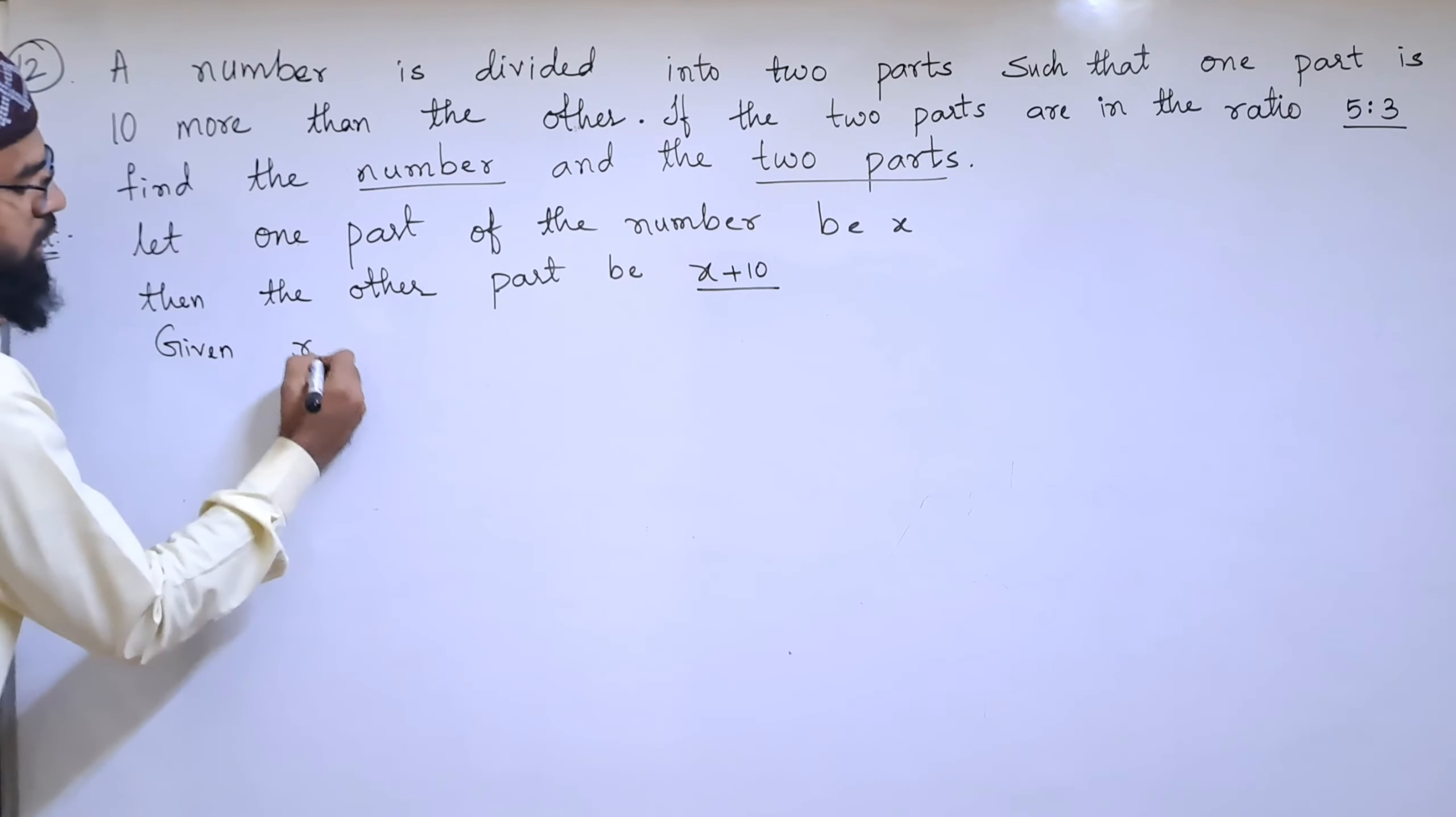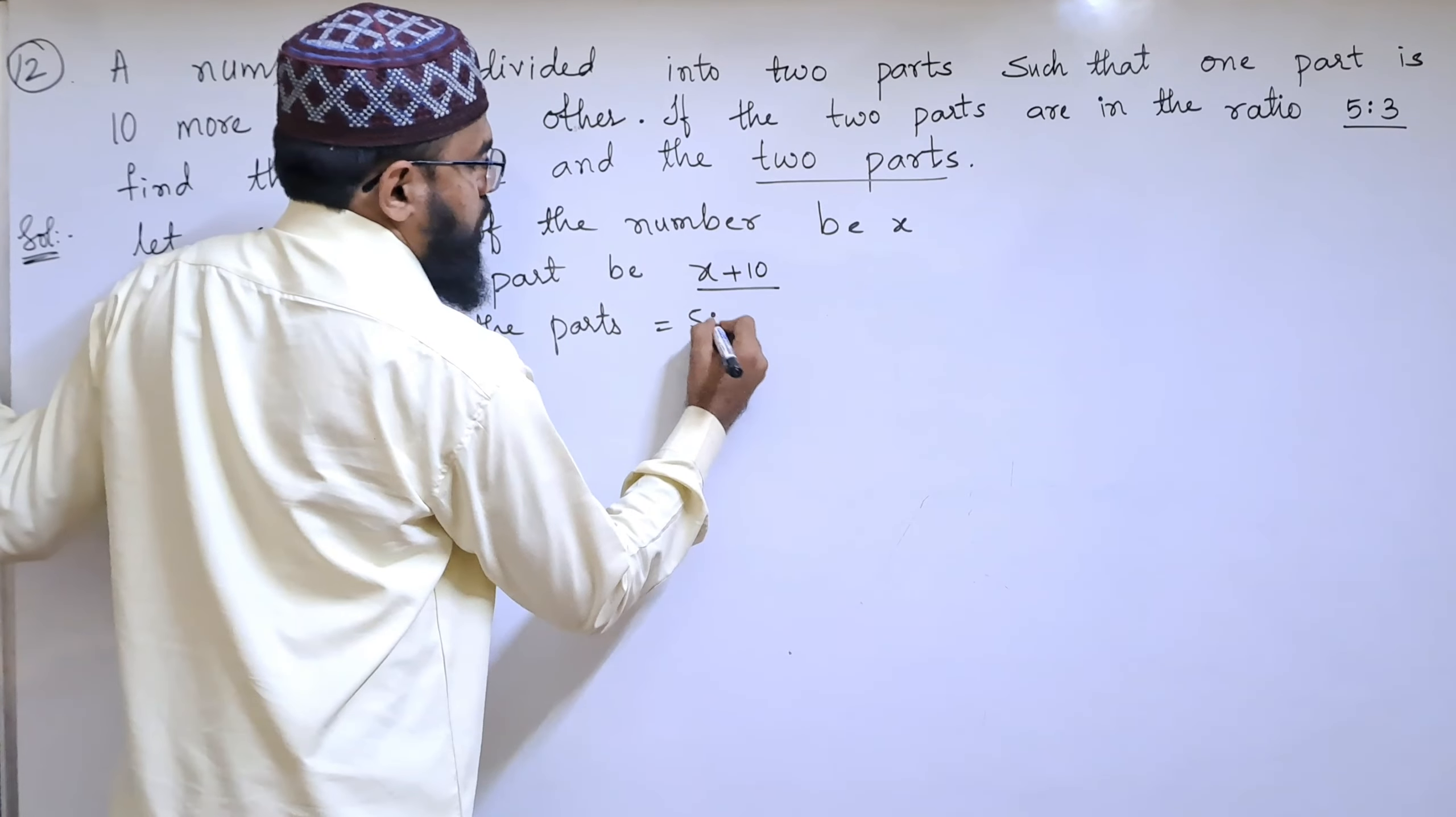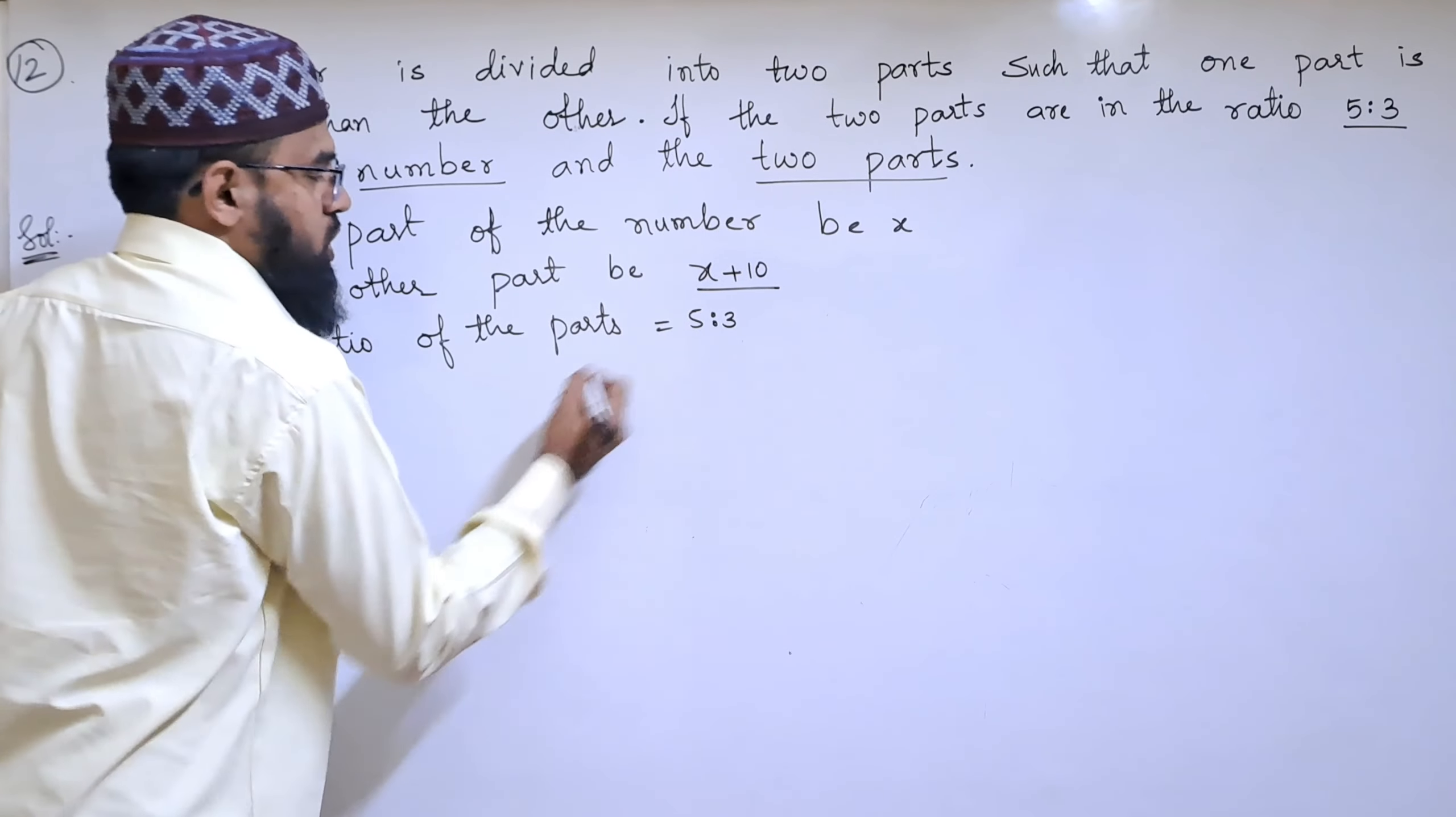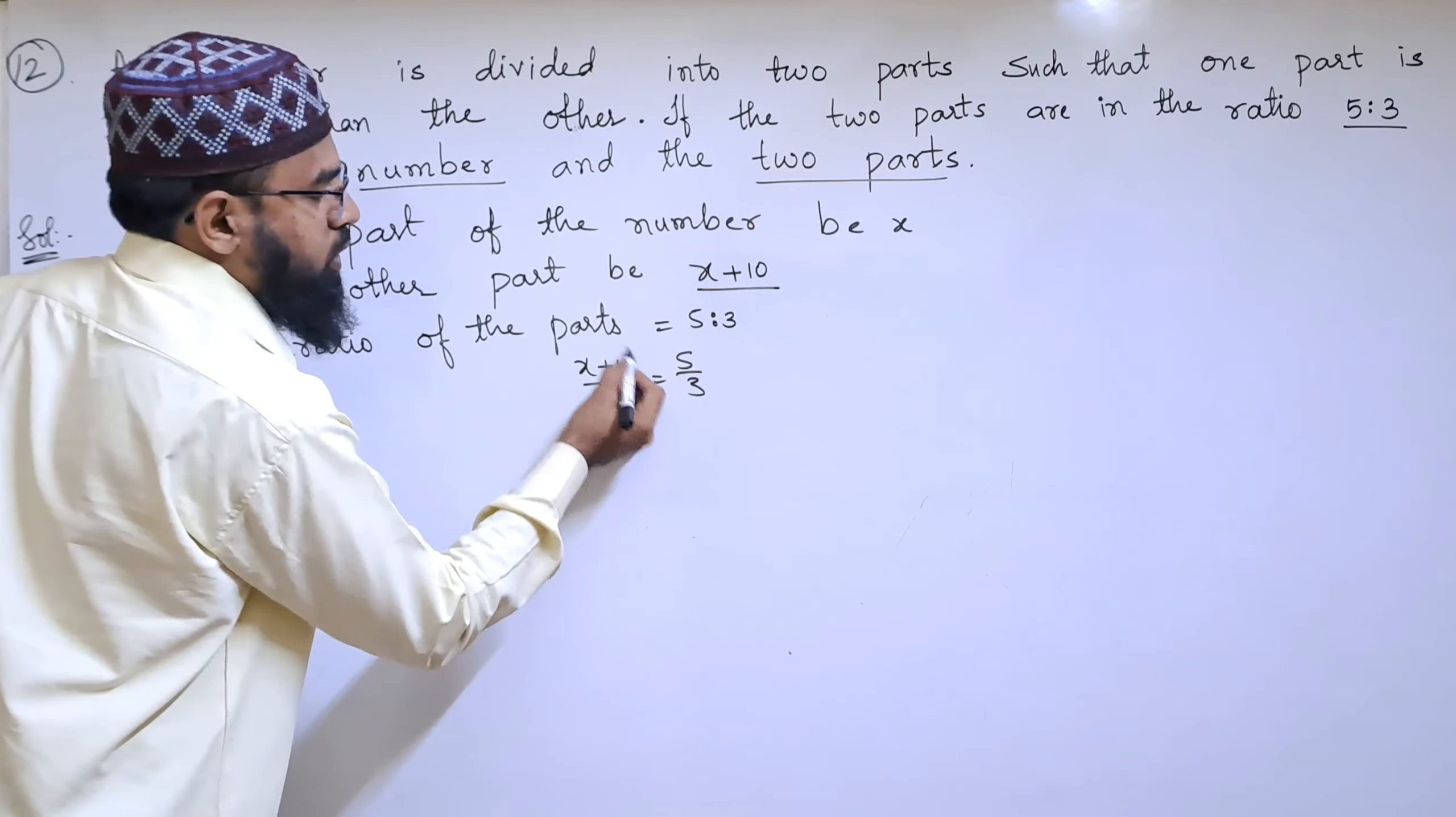The given ratio of the parts is 5:3. So we get (x+10)/x = 5/3, because the bigger number is in the numerator.